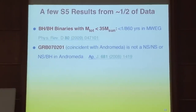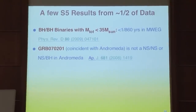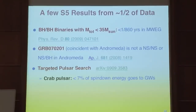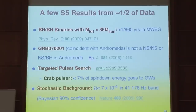There was a gamma-ray burst spatially coincident with the Andromeda galaxy, but it is clearly not a normal GRB from Andromeda because we didn't see gravitational waves from it—it's probably a soft gamma repeater. A targeted pulsar search showed that the Crab pulsar—which is spinning down—has less than 7% of its spin-down energy going into gravitational waves. The stochastic background in our frequency band is less than 7×10⁻⁶ of the closure density. These are beginning to be interesting limits, with many other results from the LIGO-Virgo collaboration.